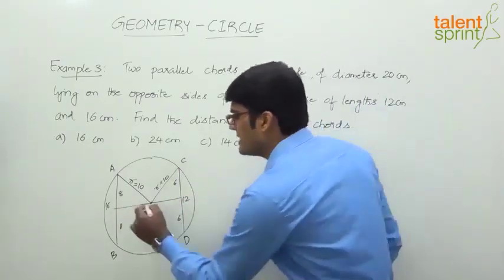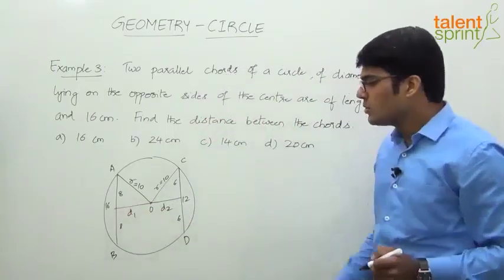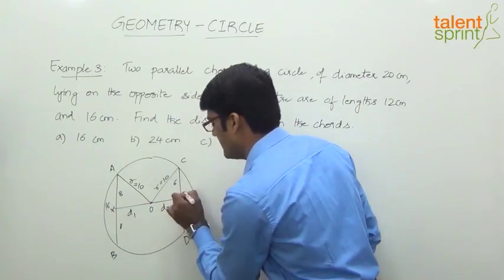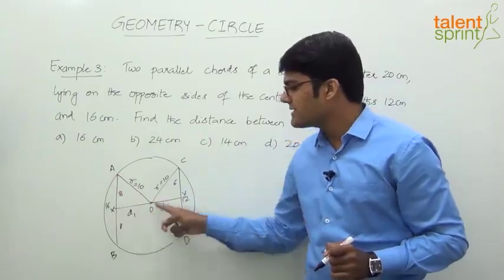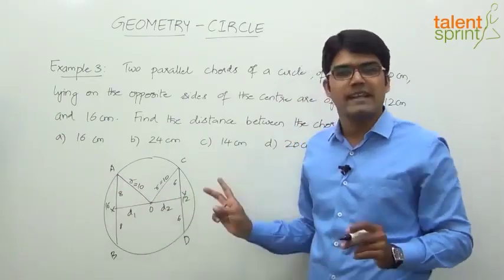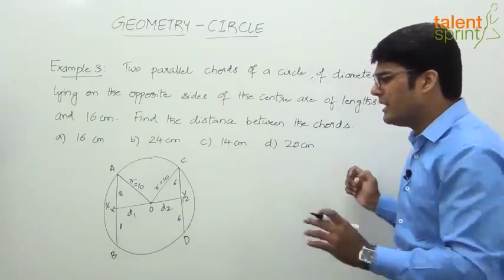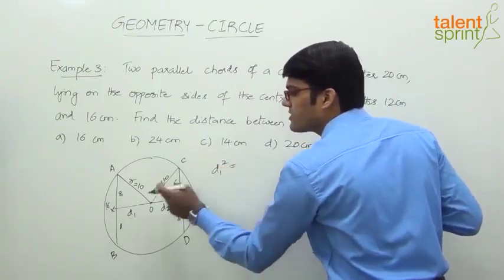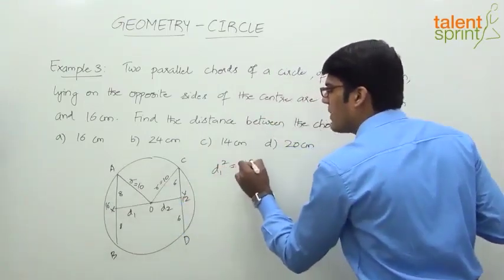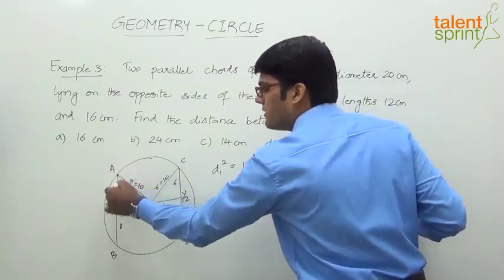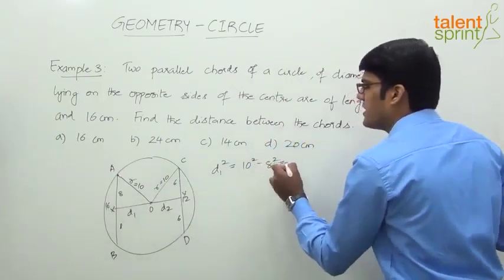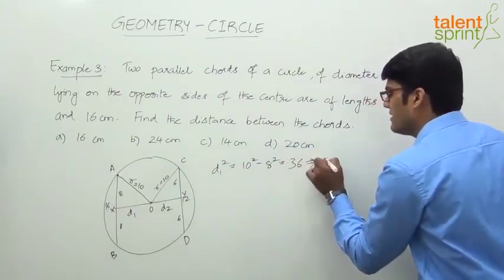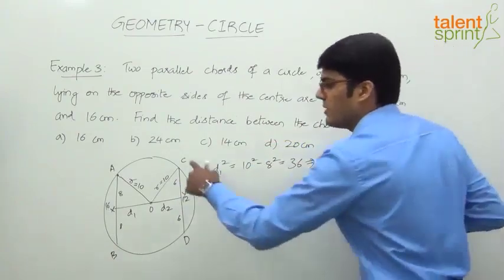Let's call the foot of the perpendicular from O to AB as point X, giving distance d1, and the foot to CD as point Y, giving distance d2. Triangle OAX is a right-angle triangle. Applying the Pythagorean theorem: d1² = 10² − 8² = 100 − 64 = 36, so d1 = 6 centimeters.